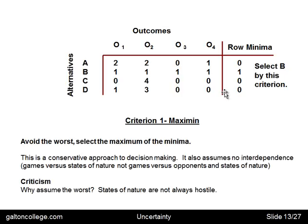The rule tells us to take the maximum of the minima. The maximum of the minima is B (with a value of 1), so with this set of figures and the Maximin decision rule we would select alternative B. Of course, that is conservative — if we selected A we have a chance of getting 2, and if we selected C we have a chance of getting 4, but we've also got three chances of getting nothing. So Maximin is to maximize the minima and it is conservative.